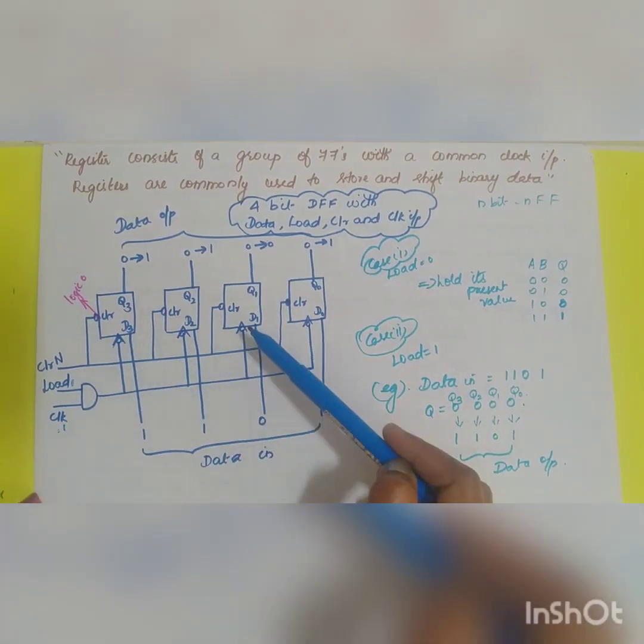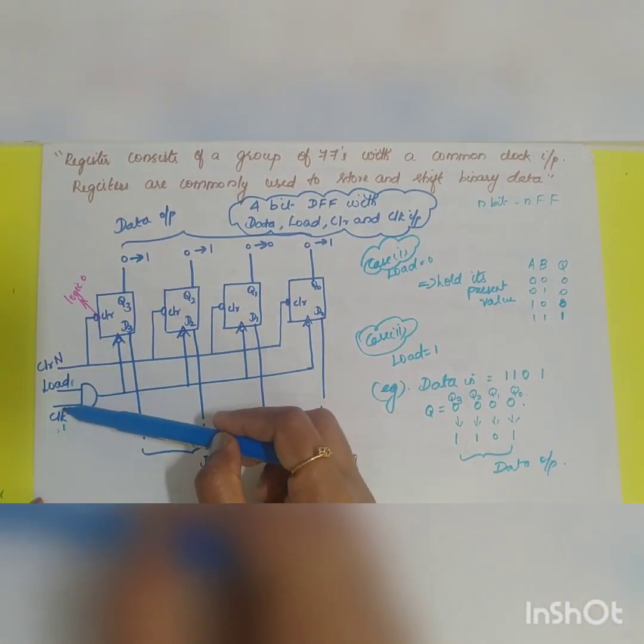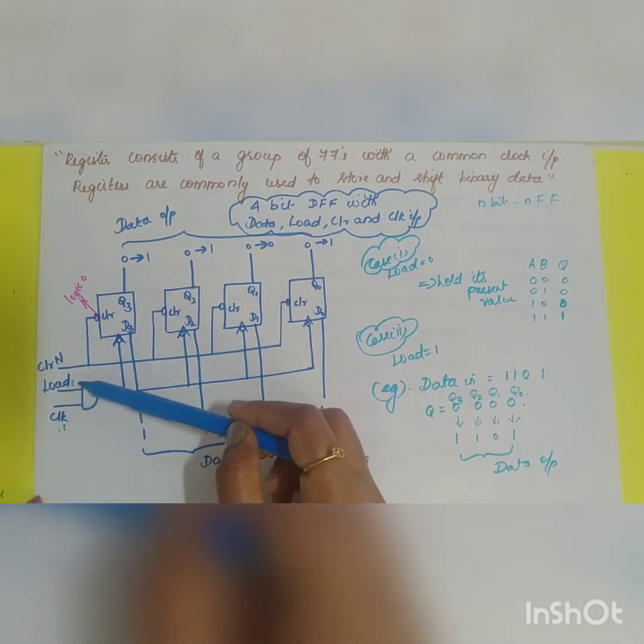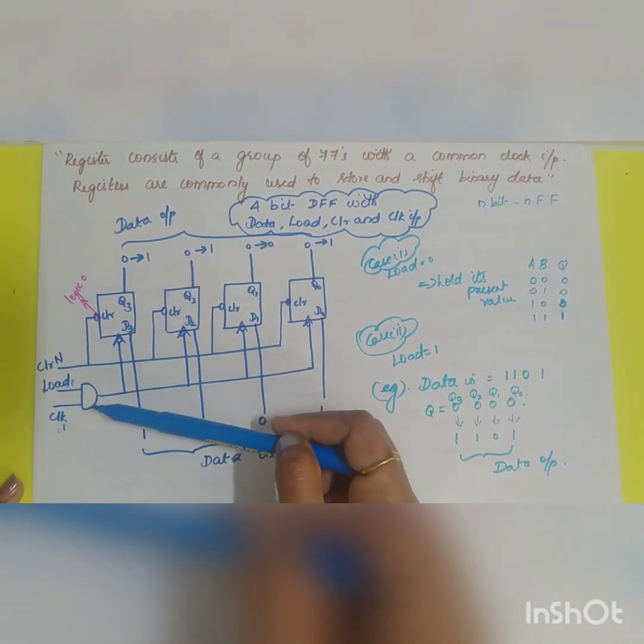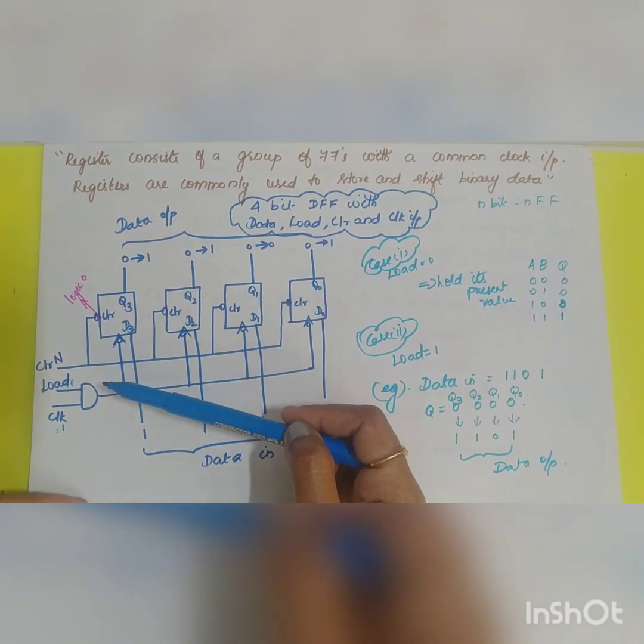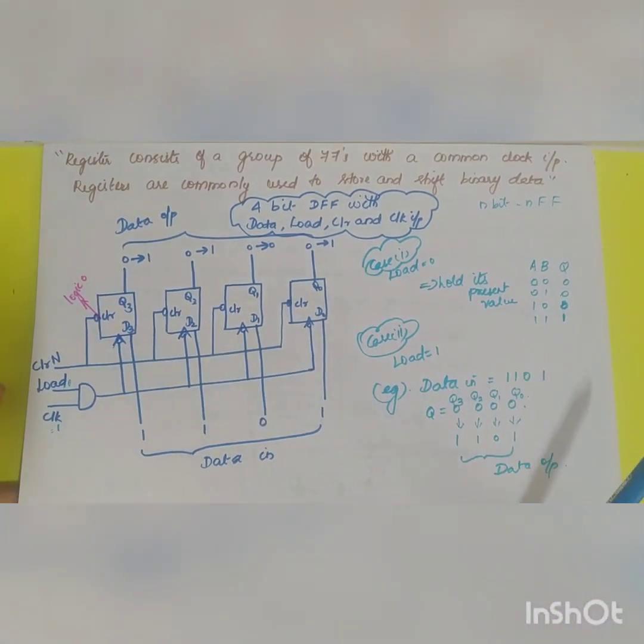load, clear and clock input. Now in this case the clock and the load are given along with the AND gate. There is a disadvantage that it gives timing errors.